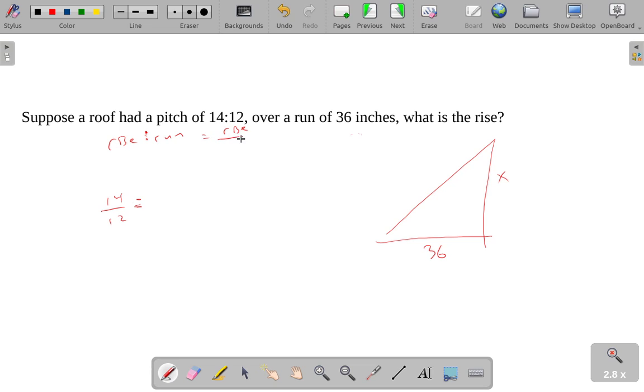So let's see. This is rise over run. The rise to run like that. So that means the run, this number for the run, we're going to want to write on the bottom part of the fraction. It's going to be a 36. And this is X. So our rise to our run on the triangle we drew here needs to be equal to 14 over 12. So X over 36 needs to be equal to 14 over 12.